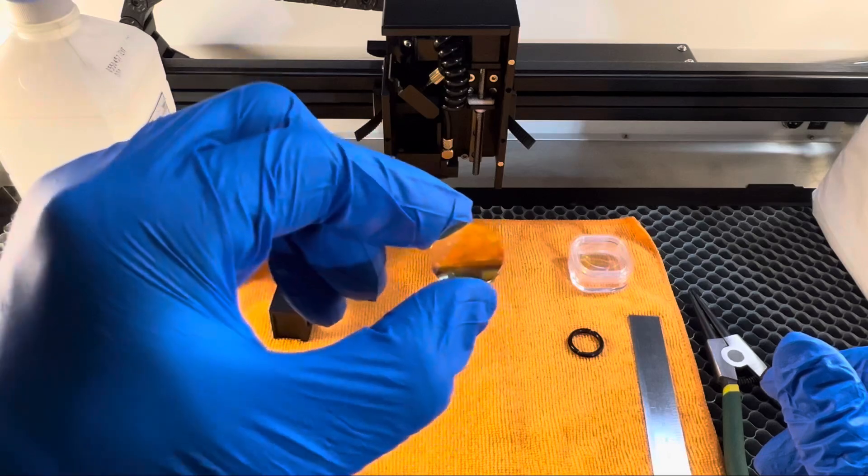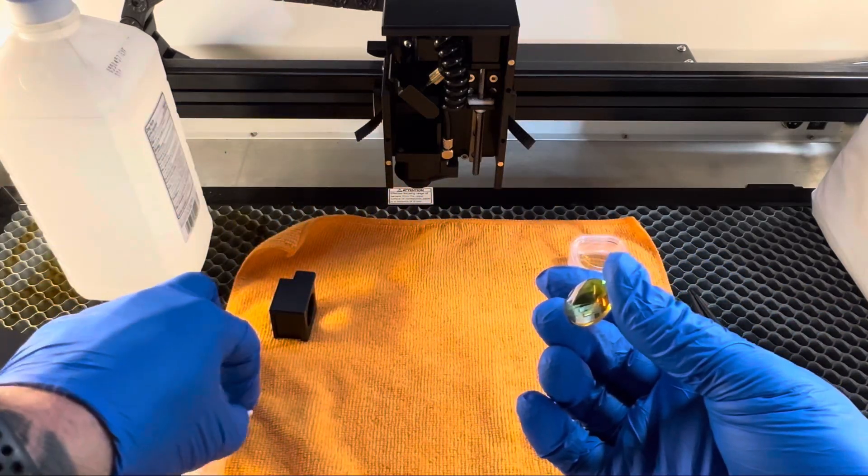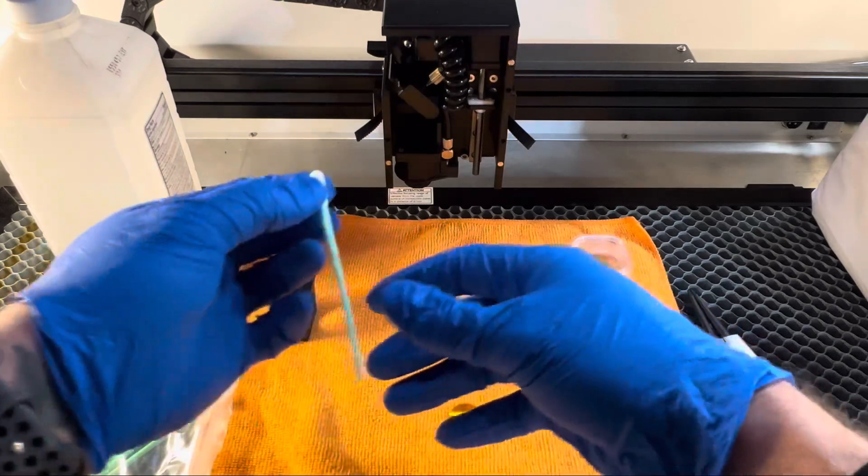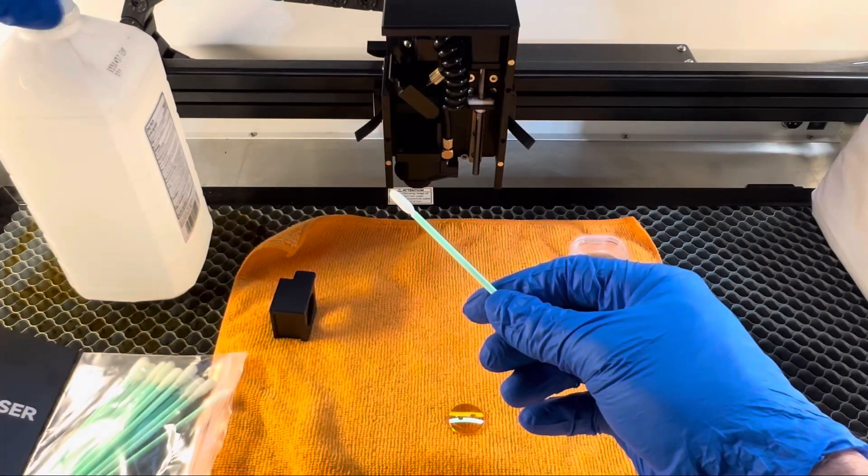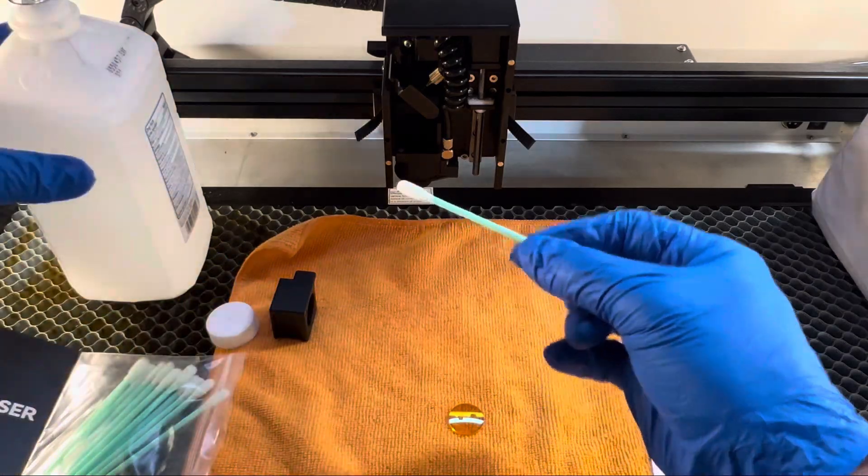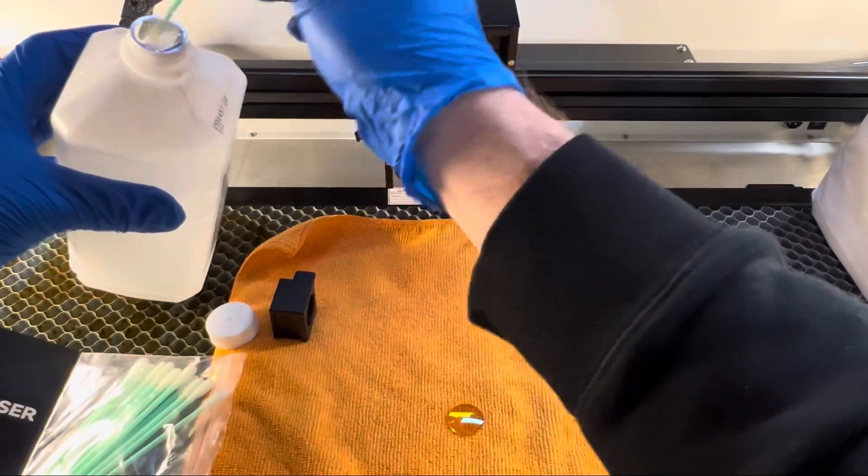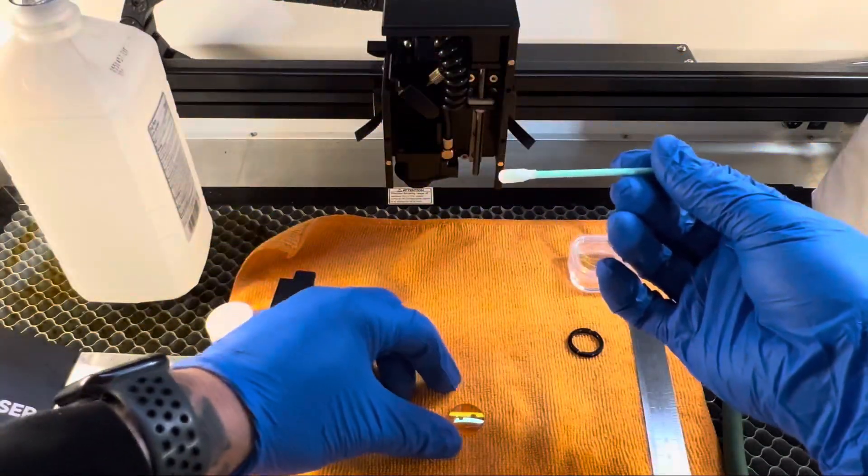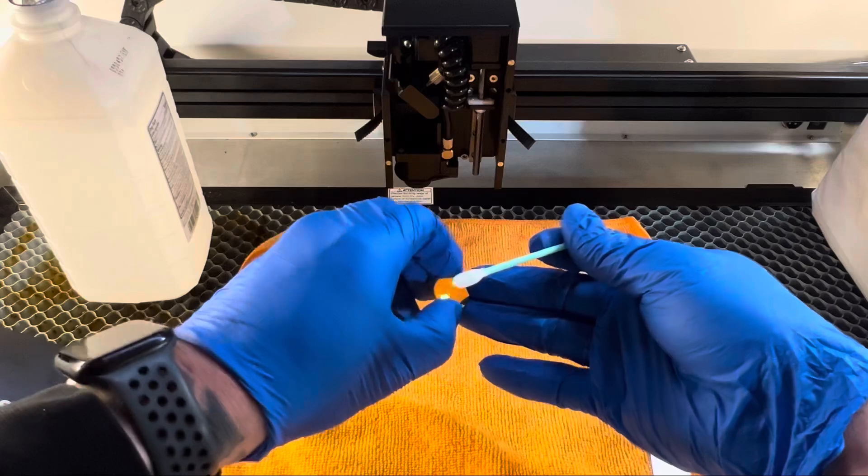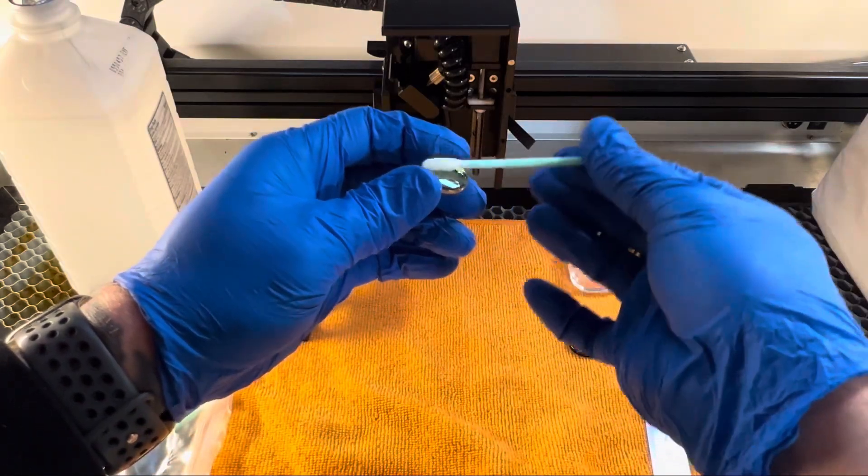Now that the lens is out, if we want to clean it, we can grab a swab and isopropyl alcohol. The preference is 99% isopropyl alcohol—if you have 91%, that's fine—but we're just going to dip it in there, grab the lens, and clean it.